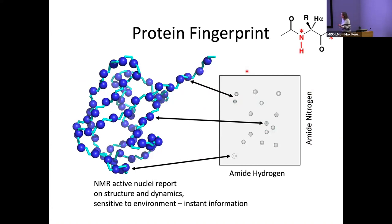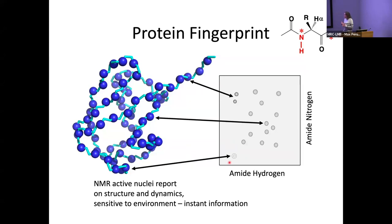The protein fingerprint — our HSQC — is a really useful initial look at your protein, because it can tell us a lot without actually having an assignment. All the information encoded in our peaks tells you about the local environment of that residue. Lots of dispersion in the amide proton dimension tells us your system is folded, and the line shape tells you whether a particular residue is in a very flexible region with sharp peaks, or in a loop with slow conformational exchange and line broadening. The NMR nuclei are very sensitive to their local environment, and if we can assign those peaks, you can transfer that information onto your structure if you have one.